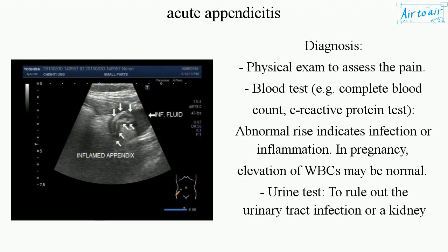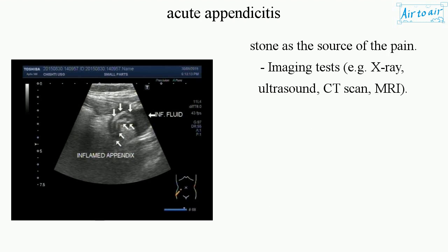Diagnosis includes: physical exam to assess pain; blood tests, e.g., complete blood count and C-reactive protein test — an abnormal rise indicates infection or inflammation; in pregnancy, elevation of WBCs may be normal; urine test to rule out urinary tract infection or kidney stone as the source of pain; imaging tests such as x-ray, ultrasound, CT scan, and MRI.